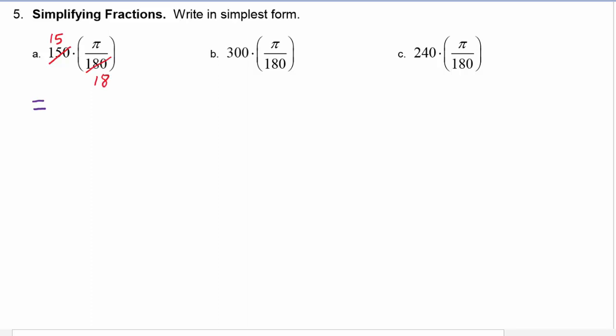And now we see that 15 and 18 have a common factor of three. So three goes into 15 five times, three goes into 18 six times. So this fraction reduces to be five pi over six.